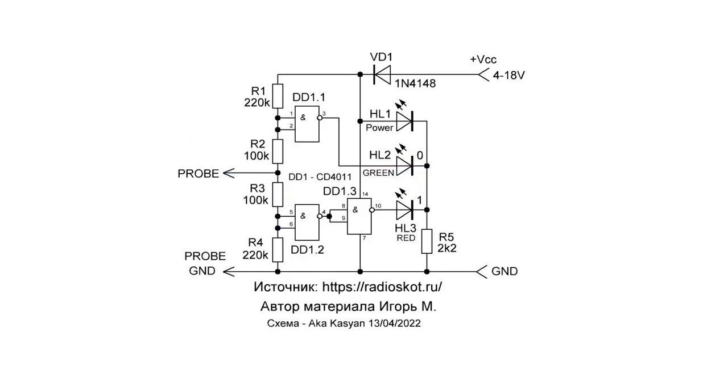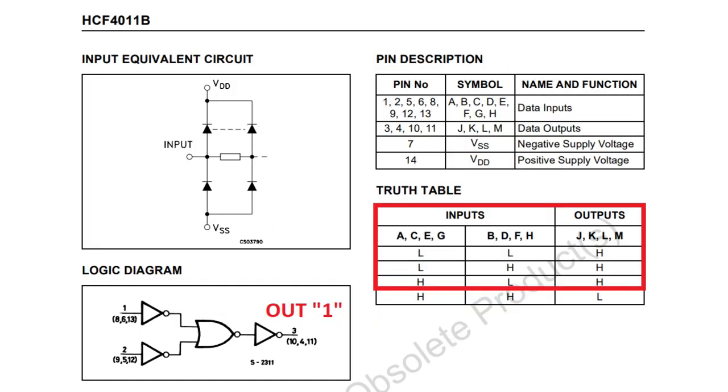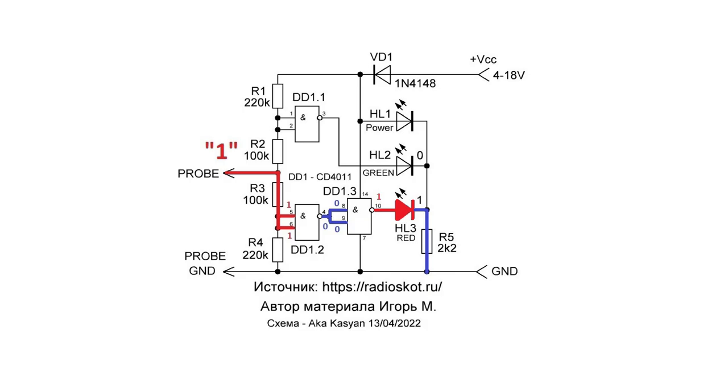The third case is a high level on the probe. The inputs of the lower element will also be high, hence the output is low. This low level goes to the inputs of the third element, and we remember that if the inputs are low, the output will be high, which leads to the glow of the red indicator. At the same time, we have a high level at the inputs of another element and a low level at the output, so the green indicator doesn't light up.